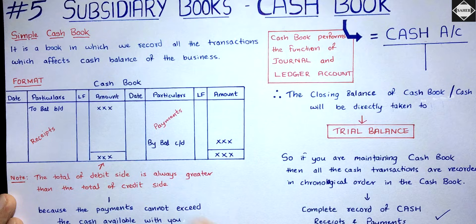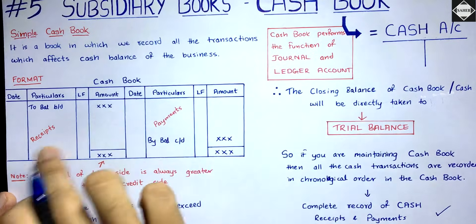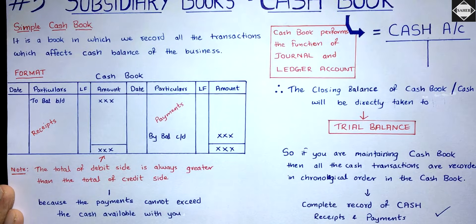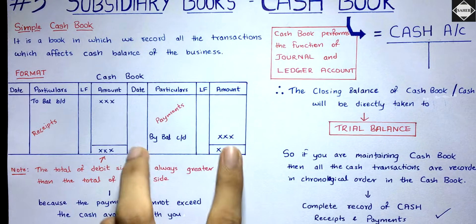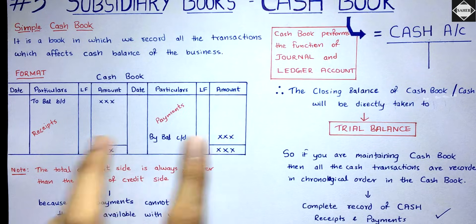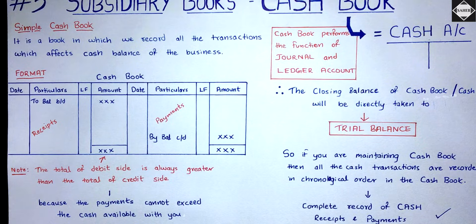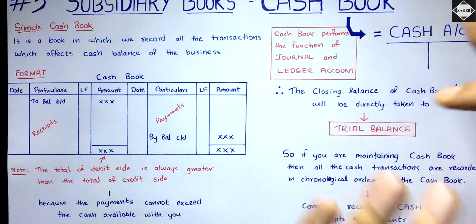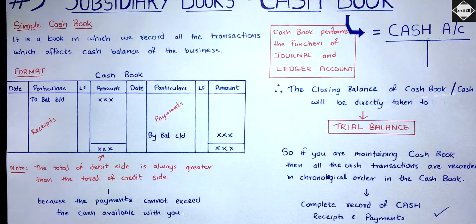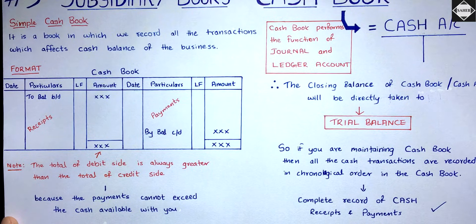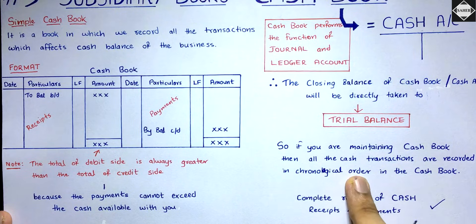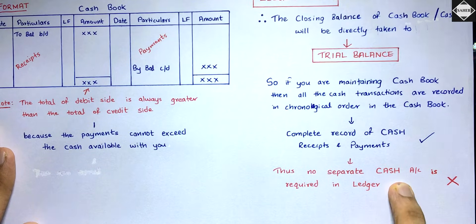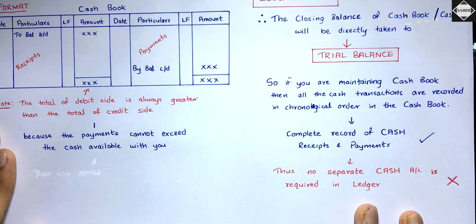Cash receipts are on the debit side and cash payments on the credit side. The total of the debit side is always greater than the total of the credit side because cash payments cannot exceed the cash available with you. So the receipt side will always be bigger, and you will always have a debit closing balance. That closing balance goes into the debit column of the trial balance. Since you are maintaining the cashbook, there is no need to prepare a separate cash ledger account.